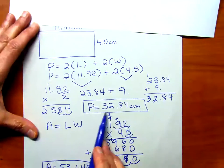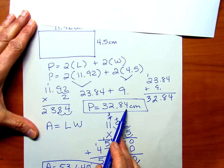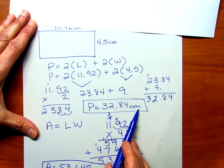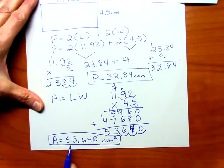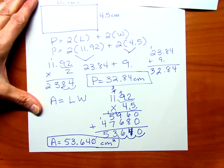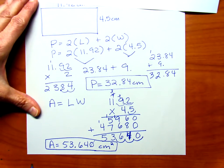So our perimeter is 32 and 84 hundredths centimeters, and our area is 53 and 64 centimeters squared, or 64 hundredths centimeters squared. So you're going to be given some problems, and I believe they're all rectangles, and you will figure out the perimeter and the area of those rectangles.